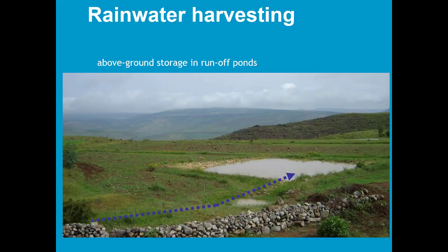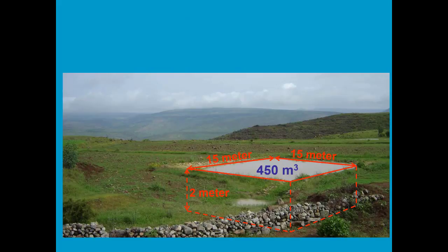Since in July and August the rainfall is very high, the United Nations promote the construction of ponds in which surface runoff can be stored. These ponds are rather large — roughly 15 by 15 meters and on average 2 meters deep — so they can contain half a million liters of water.